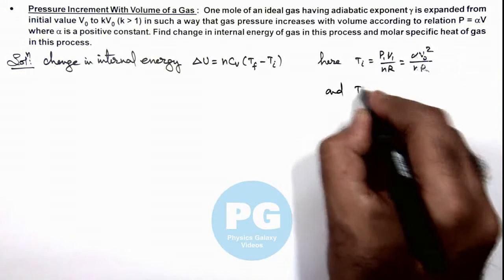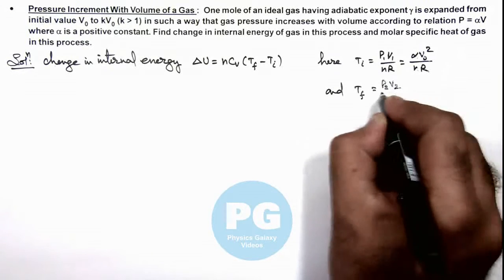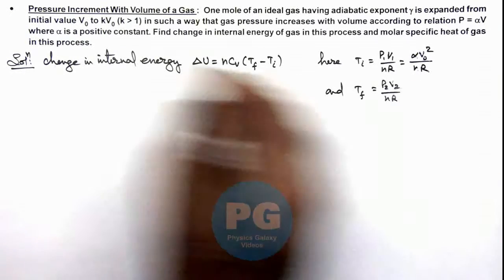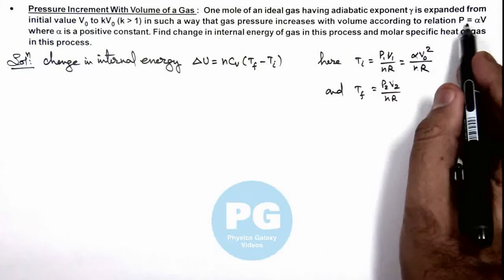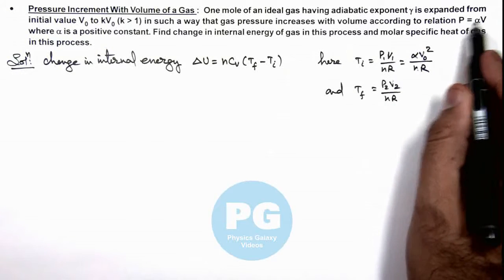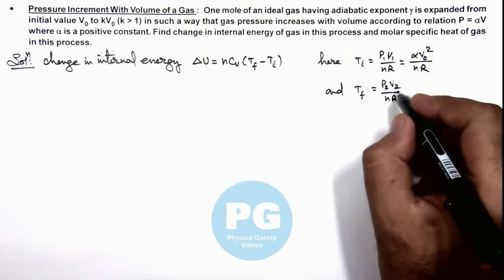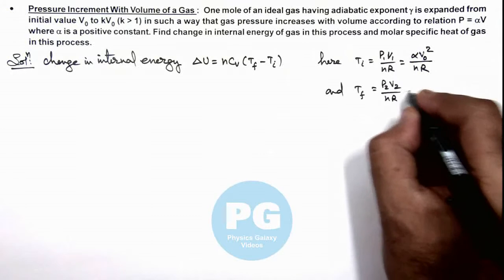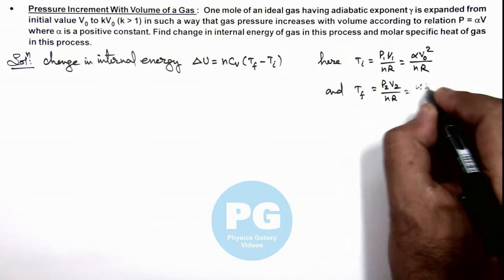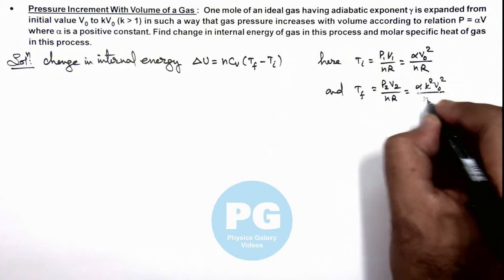And final temperature is P₂V₂ by nR. So final volume is kV₀, so pressure will be αkV₀. So on substituting the value of P₂V₂, this will be αk²V₀² divided by nR.